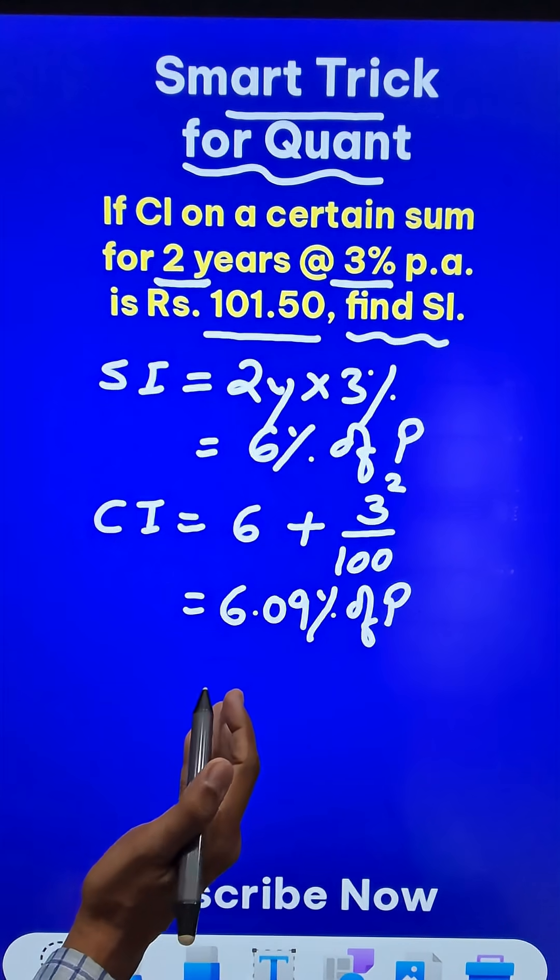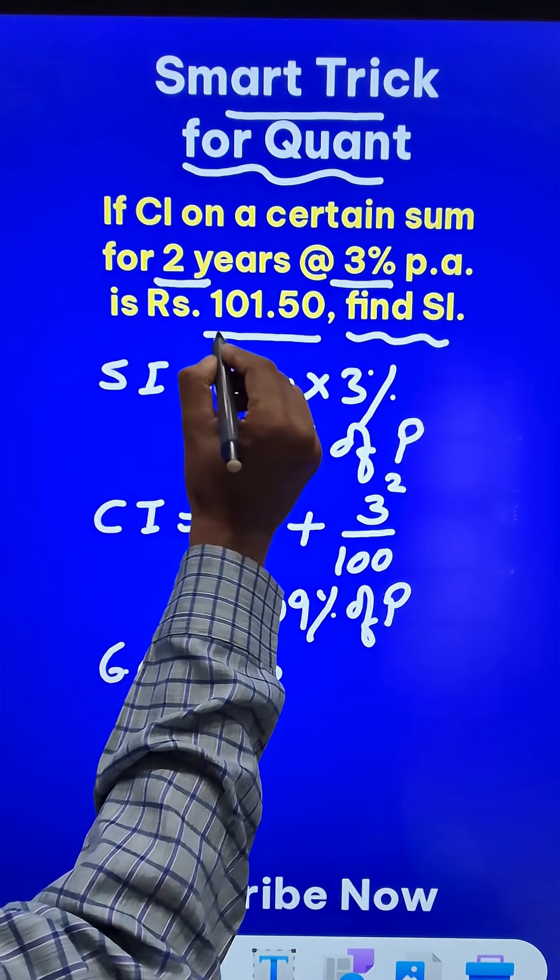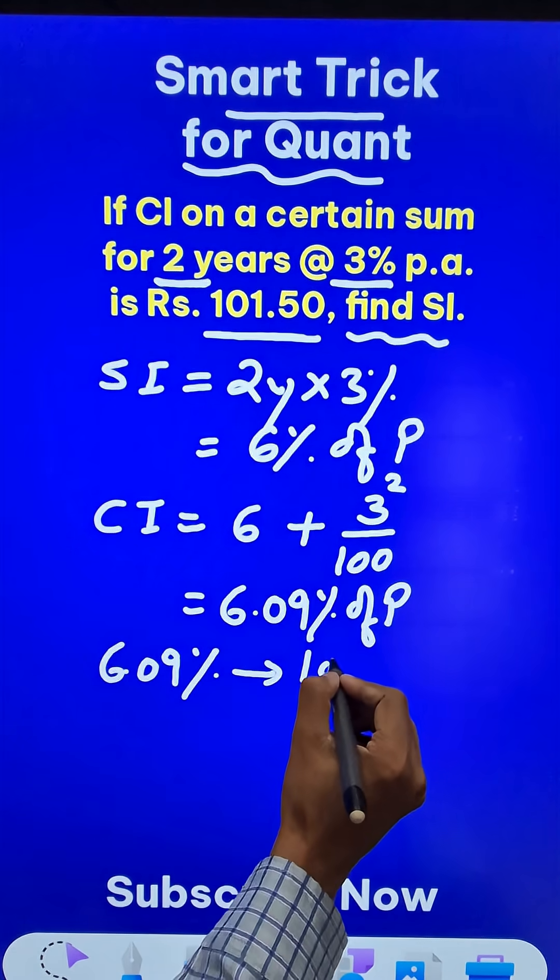And now we can apply the unitary method. 6.09% will give you the CI given here, 101.50.